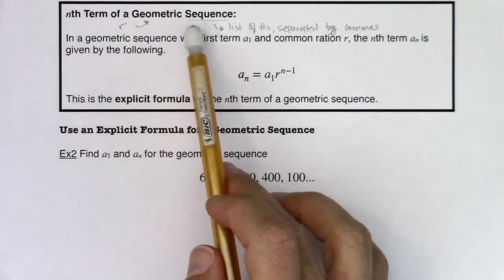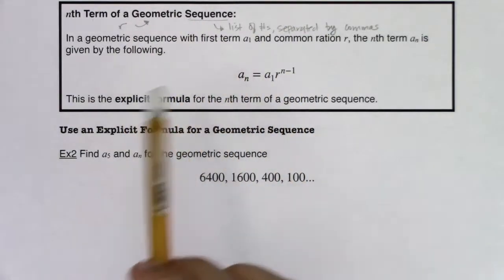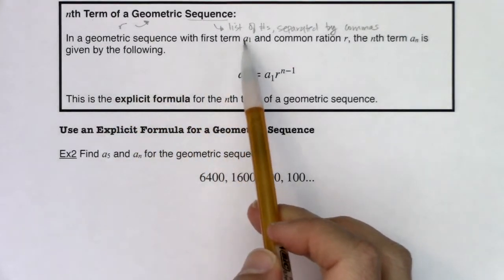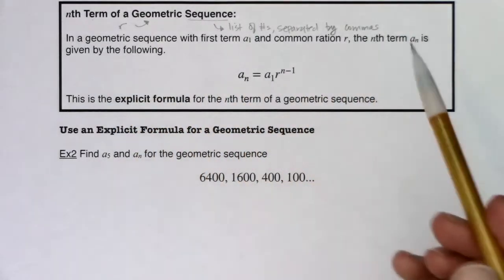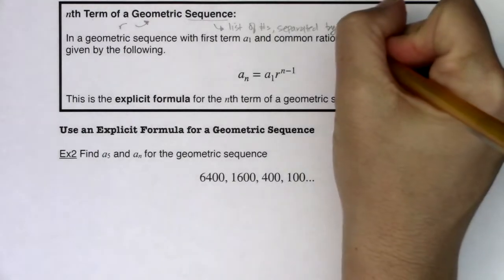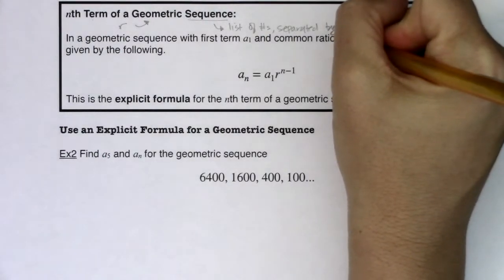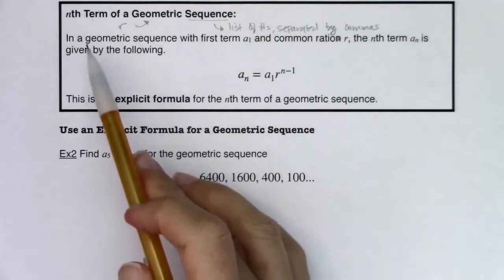Geometric, we're multiplying by a common ratio to get from one term to the next. So in a geometric sequence with the first term a sub 1 and a common ratio—that says ration, let's go ahead and just pretend that's not there. This should definitely be the word ratio. I will fix that.